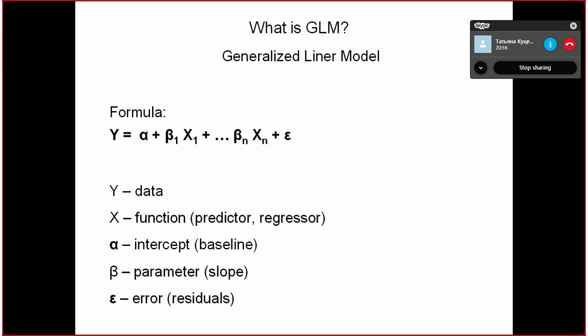And there can be a lot of different predictors, but the other important part is this: epsilon is the error, and that's why it is also called residuals. It is the residual variance of the data which is not explained by X.